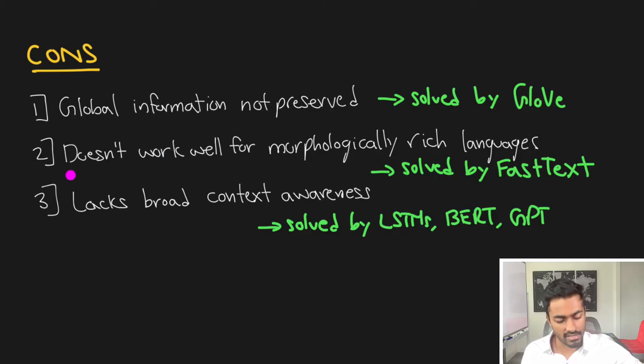A second con is that it doesn't work very well for morphologically rich languages and this can be solved with FastText, which we will also look at next. And the third is that it lacks broader context awareness, which we have looked at in the past with LSTMs, BERT and GPT. I'll link those videos in the description.